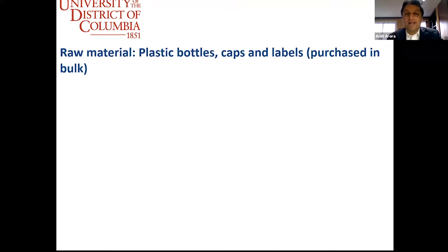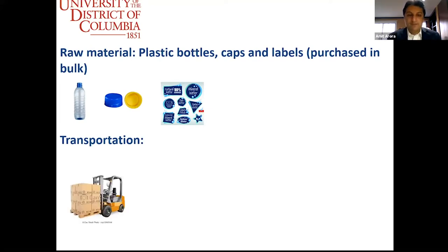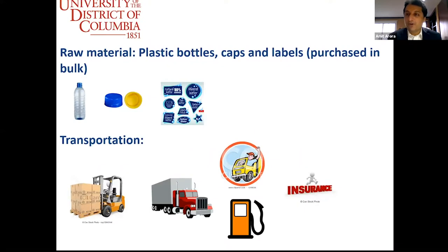All that bulk material has to be transported from the supplier to your bottling plant. At the vendor end, you need forklifts and trucks to move raw materials, truck drivers, fuel, and insurance — all adding to the cost. Once everything is transported and arrives at your bottling plant, you need an assembly line, conveyor belts, employees, electricity, and office space to run the plant. You have to produce hundreds of thousands of bottles to make your operations cost-effective.